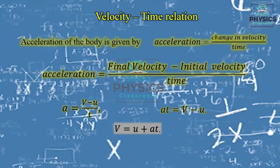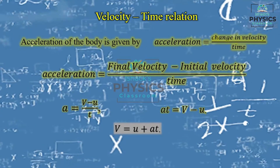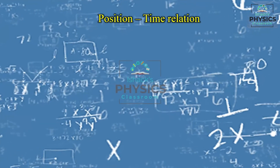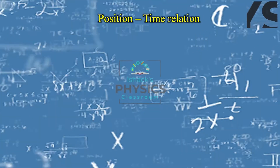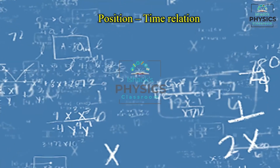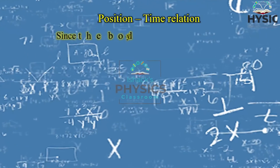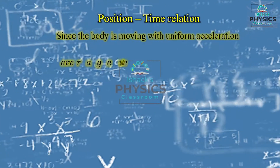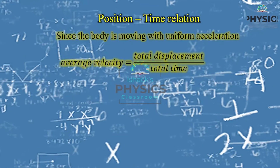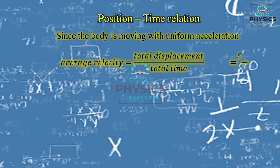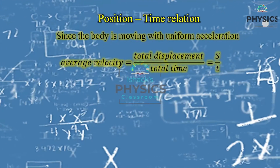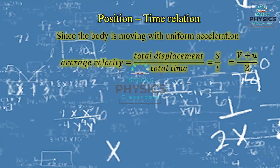Second equation: position-time relation. Since the body is moving with uniform acceleration, average velocity is equal to total displacement divided by total time taken, that is s/t. If we have two velocities — final velocity v and initial velocity u — then average velocity = (v + u) / 2. Both s/t and (v + u)/2 are expressions for average velocity. So s/t = (v + u) / 2. Cross multiplying: 2s = (v + u) × t.